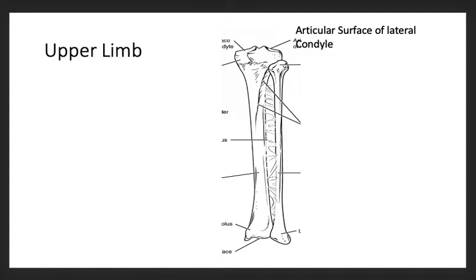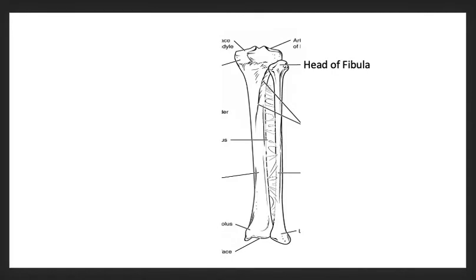Then we have the lower limb, which includes the articular surface of the lateral condyle, head of the fibula, soleal line, fibula, and lateral malleolus.